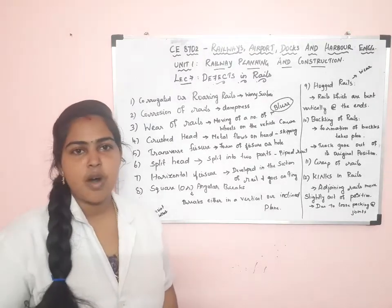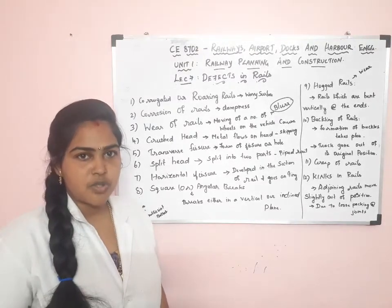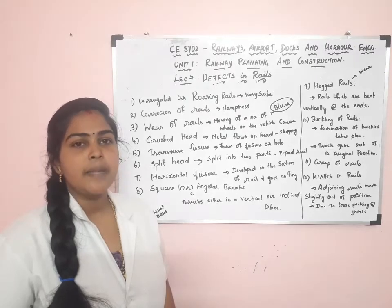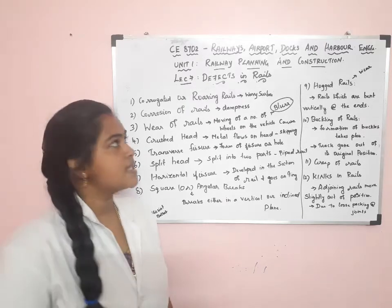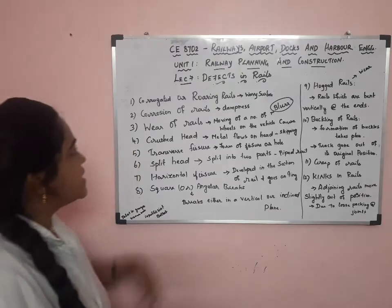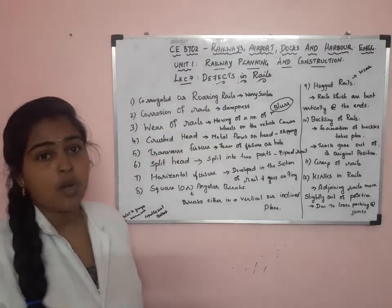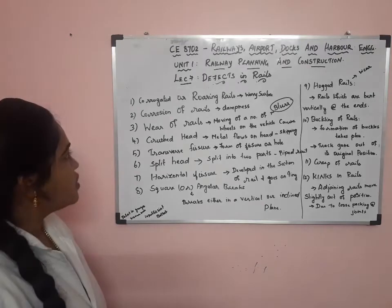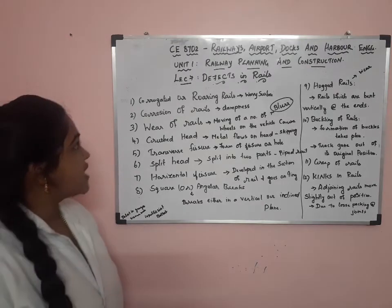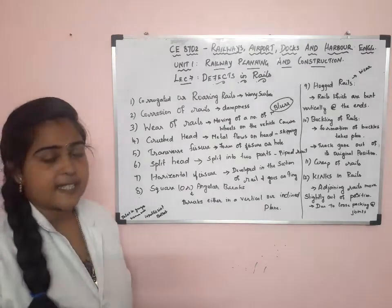Hello students, good morning to all. Myself Deva Rajashribba, Assistant Professor, Department of Civil Engineering, Punchesley College of Engineering. The subject code is CE8702, Railways, Airport, Docks and Harbour Engineering. Today in this class, I am going to discuss about Defects in Rails.